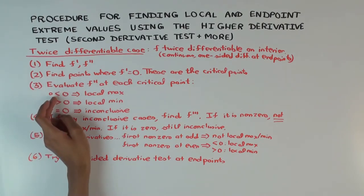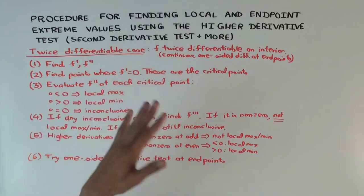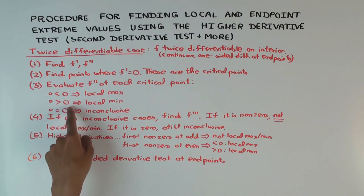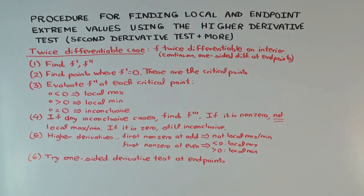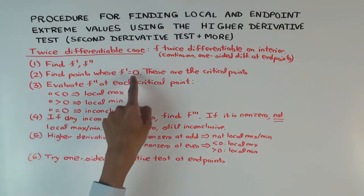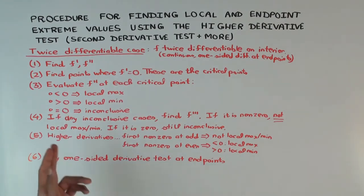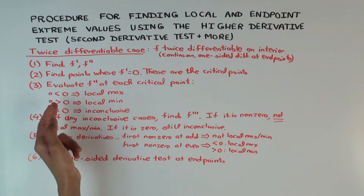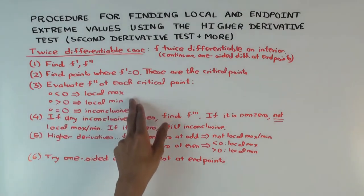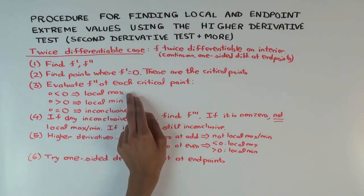If f'' at a critical point is less than zero, that means f' is decreasing, which means it's going from positive to negative, which means the function is going from increasing to decreasing — so you have a local max. And if f'' at a critical point is greater than zero, then f' is increasing, going from negative to positive, meaning the function goes from decreasing to increasing — so you have a local min. You can watch the video on the second derivative test for more detail.